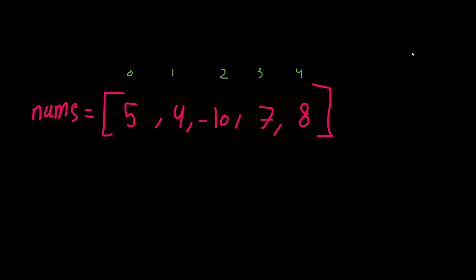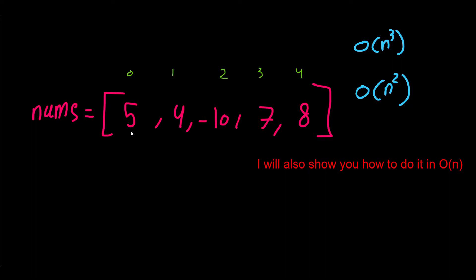We find the sum from each of those subarrays and return the maximum sum. The time complexity of this brute force approach would be either O(n³) or O(n²) depending on how you implement it. I will show how we can implement it in O(n³) and then how we can go to O(n²).